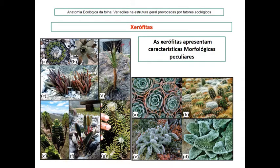Em muitas plantas, como na canela-de-ema (a velozia), o caule chega a desenvolver raízes adventícias que saem por entre essas bainhas de folha e absorvem água e minerais trazidos pelo vento. Às vezes o caule é fino, mas parece grosso porque está revestido por essas bainhas com função de proteção.